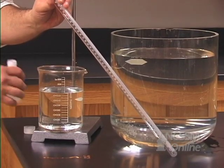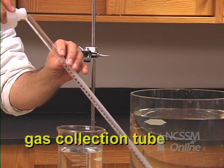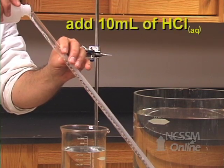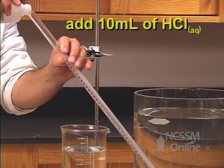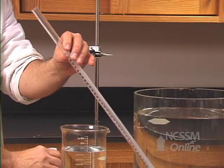We have a gas collection tube that is graduated in milliliters and tenths of a milliliter. I'm going to carefully add about 10 milliliters of 6-molar hydrochloric acid to the tube. The amount of hydrochloric acid is not critical, seeing how it will be in a very large excess.